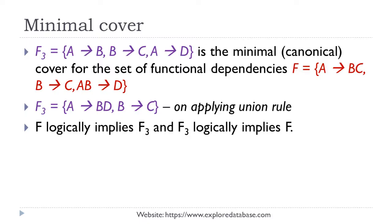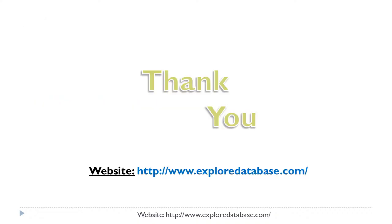At this stage, we conclude that the minimal cover for the given f is f3. f3 can be further written as a→bd and b→c, after applying the union rule to a→b and a→d. We can say that f logically implies f3 and f3 logically implies f — the functional dependencies of f can be inferred using FDs of f3, and vice versa. In this lecture, we learned how to compute a minimal cover for a given set of functional dependencies. Thank you.